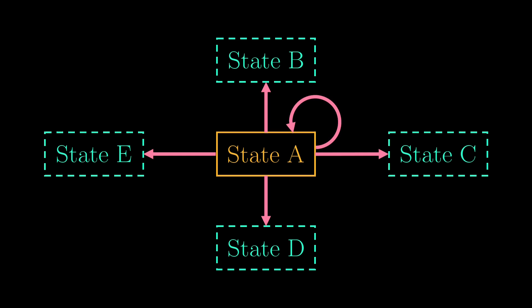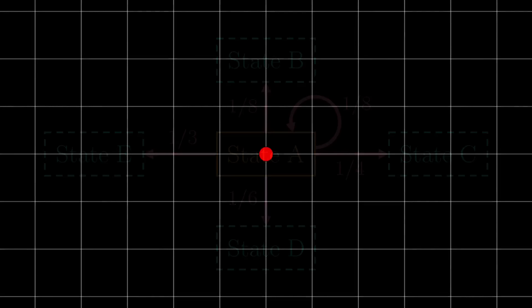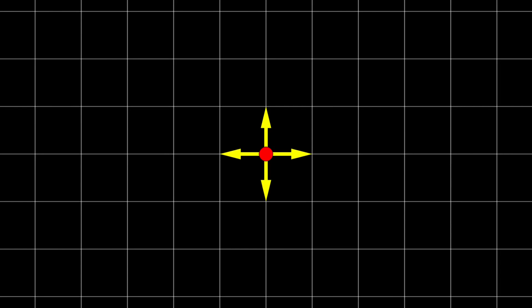For each possible transition, we assign a probability to it. They are the transition probabilities. For a 2D random walk, each state has four neighbours, and because we have no bias towards any direction, the transition probabilities are all one-quarter. Similarly, for a 3D random walk, each state has six neighbours, and so the transition probabilities are all one-sixth.